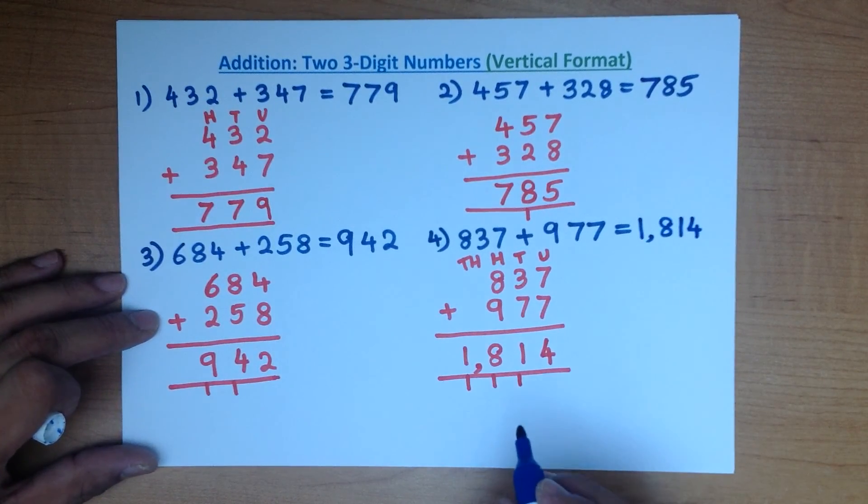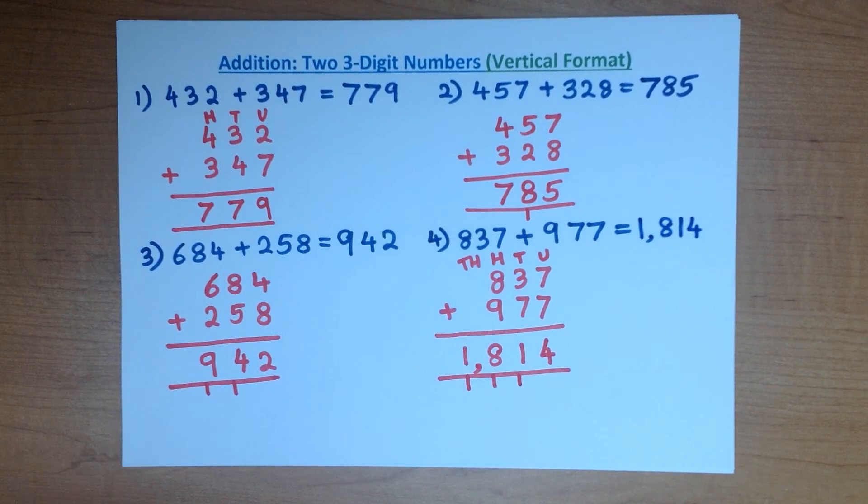Always remember to write the columns neatly and correctly. Once you do that, adding them is very simple. So that is the addition of two three-digit numbers using the vertical format.